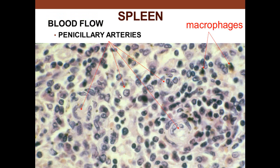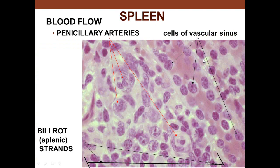We can see the penicillus arteries dumping whole blood into the Billroth strands, with plasma cells and macrophages present there. The macrophages have already engulfed material and are involved in presenting antigens to reactive immune cells. The penicillus arteries empty into the Billroth strand, which lies between one sinus and another.